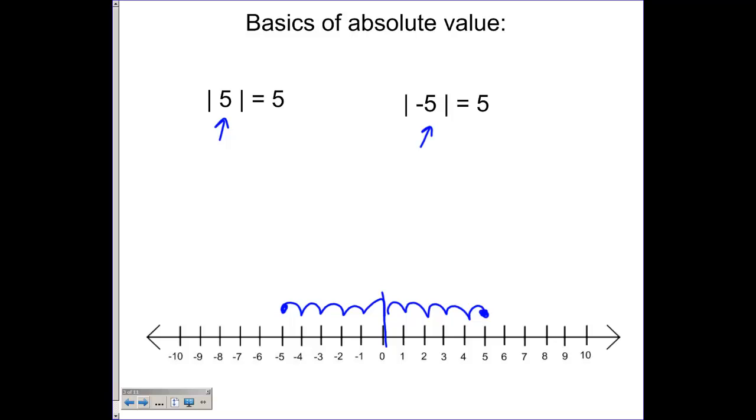So it's a distance calculation, that's why it always comes out positive. If this were equal to a negative, that would be impossible because we don't talk about negative distances on the number line.